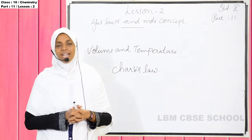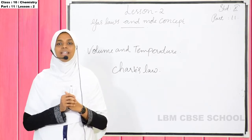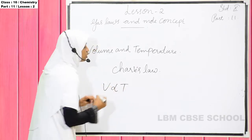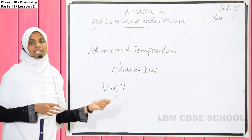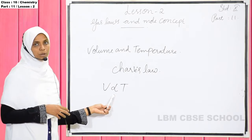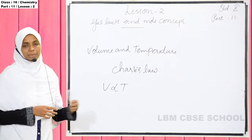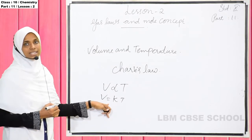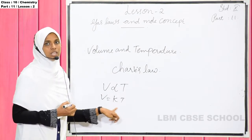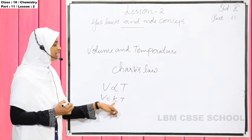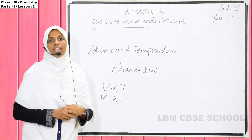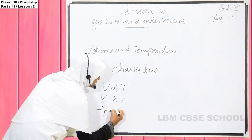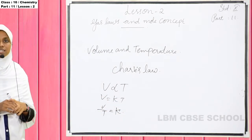If V is the volume and T is the temperature, V is directly proportional to T. This sign indicates directly proportional. V is directly proportional to temperature, so V is equal to K multiplied by T, where K is the constant. Then V divided by T equals K. That means volume divided by temperature is constant in Charles's law.